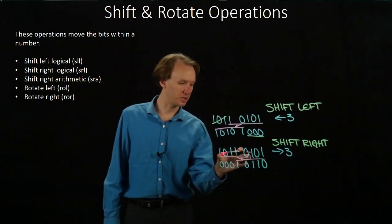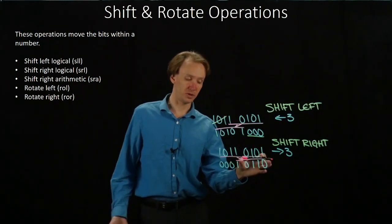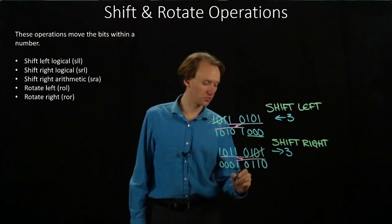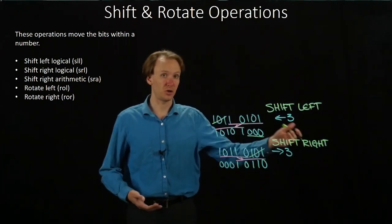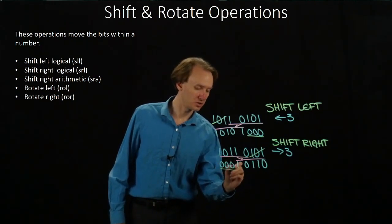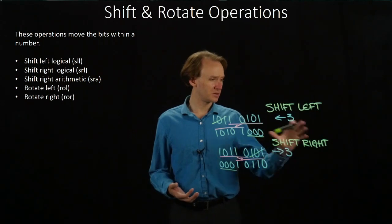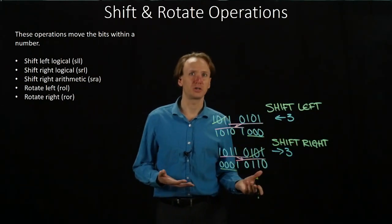So again, these five bits moved right three places. I lost three bits on the right-hand side because they fell off my number, so I added three zeros in on the left. This is a shift right logical operation, though.